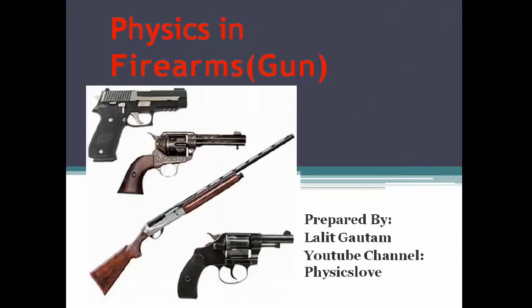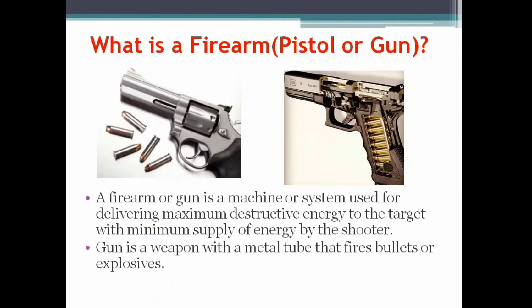Hello everyone, welcome to your YouTube channel Physics Love. Today we are here to discuss a very interesting topic: physics in firearms. First, let's understand what a firearm is. A firearm or gun is a machine or system used for delivering maximum destructive energy to the target with minimum supply of energy by the shooter.